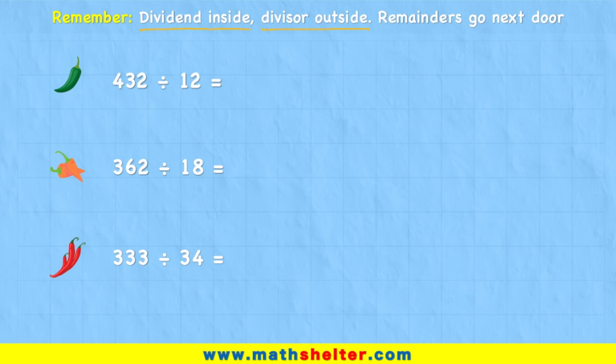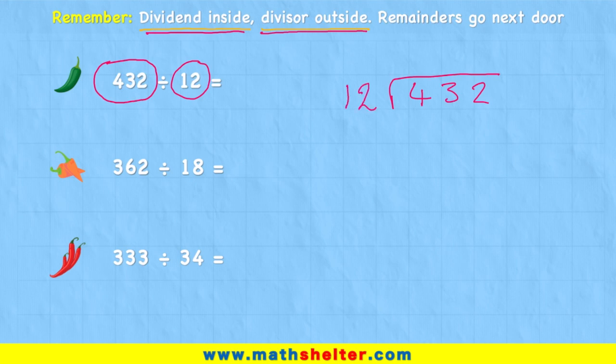So let's have a look at what that means with this first example. So I'm going to draw my bus stop and the dividend goes inside. Well, the dividend is the number that we are sharing. So I have 432 in this case. And the divisor goes outside my bus stop. And in this case the divisor is 12. I'm sharing 432 between 12. So I put my divisor outside.